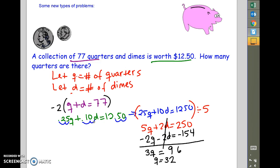Move over the decimal twice on each one. So you end up with 25Q plus 10D equals 1,250. These are all divisible by 5, so we get 5Q plus 2D equals 250. Multiply this one by negative 2 to eliminate the D. So we get negative 2Q minus 2D equals negative 154. The D's eliminate. The 3Q equals 96 and Q equals 32. And since we're only looking for quarters, that's all we have to do. So there are 32 quarters. I don't need to plug it back in because I'm not looking for the dimes.